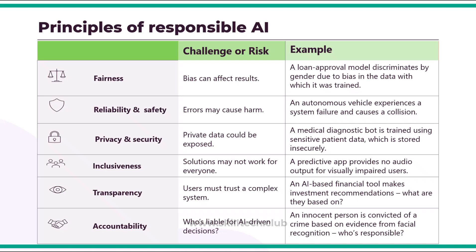The fourth principle is inclusiveness. When you develop an AI application, some solutions may not work for everyone. For example, if you create a predictive app that provides no audio output, it may work fine for a person who can hear and see normally, but not for a visually impaired person. There are chances your application will not have inclusiveness for everyone.